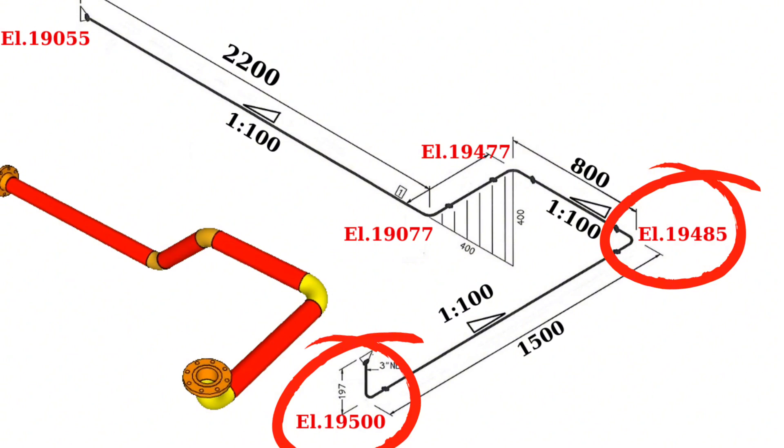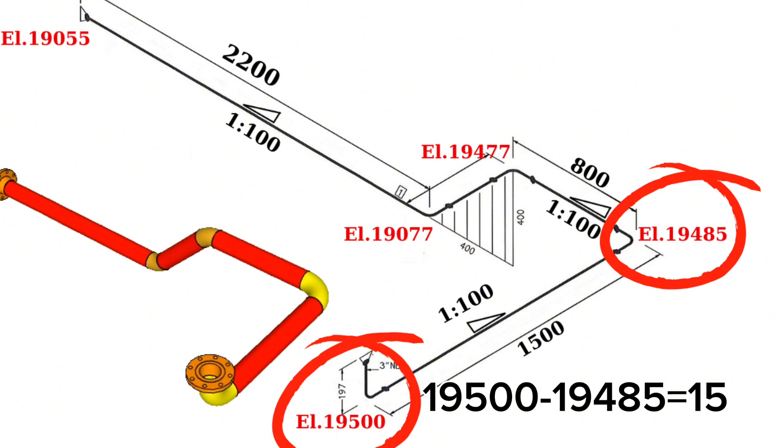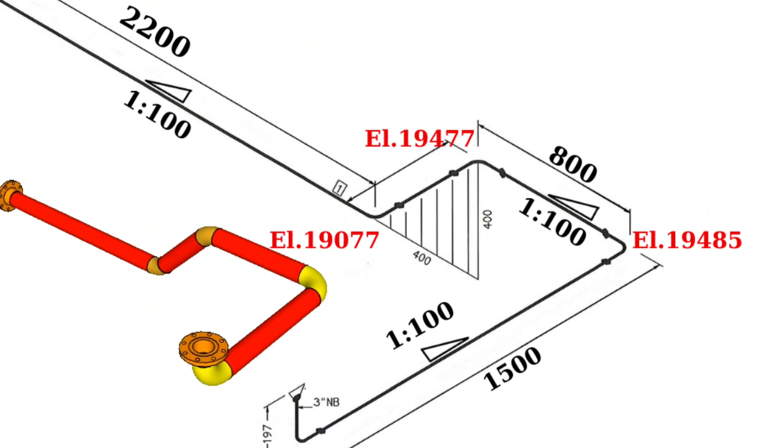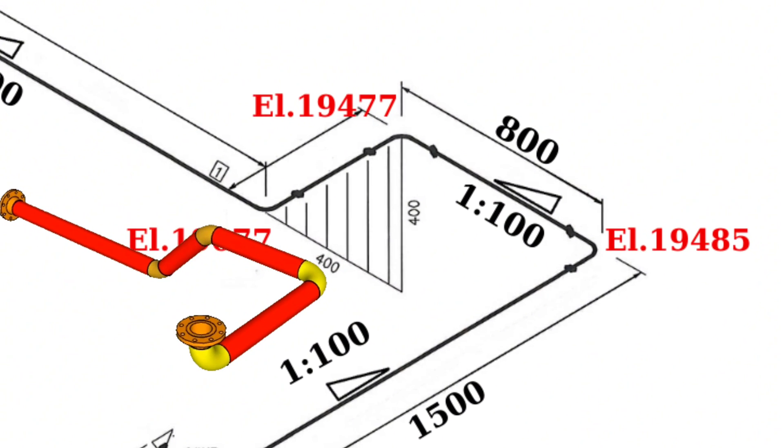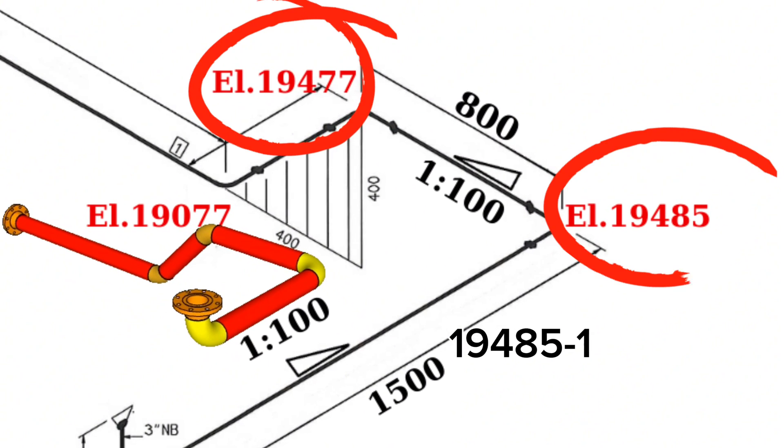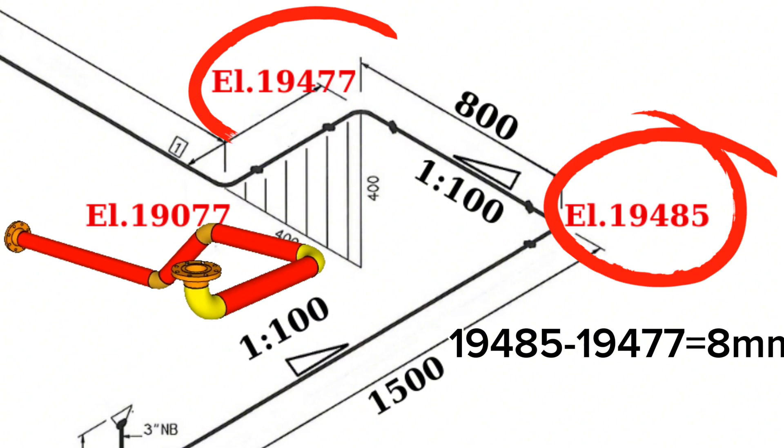Where the initial height 19,500 millimeters minus the second height 19,485 millimeters equals 15 millimeters. With this method we can calculate the difference of the levels in the second and third rotations. Second elevation 19,485 millimeters minus third elevation 19,477 millimeters equals 8 millimeters.